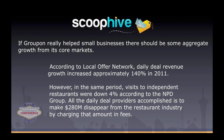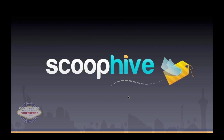If these daily deals really helped small businesses, there should be some market growth. The only growth shown is in the local offers network — daily deal companies jumped in revenue 140% since 2011. In the same period, visits to independent restaurants were down 4%. The places they aimed to help most were hurting while the deal company was getting bigger. I wanted you guys to have this background because you're going to go out and sell this — you'll confront people who've done Groupon before and say they lost money. Scoop Hive is different.